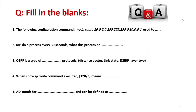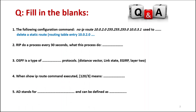Question one, fill in the blanks. Number one: the configuration command 'no ip route 10.0.2.0 255.255.255.0 10.0.3.1' — here the normal static routing command 'ip route' is preceded by 'no', which means negation or delete. The answer is: delete a static route entry, specifically 10.0.2.0, from the routing table.